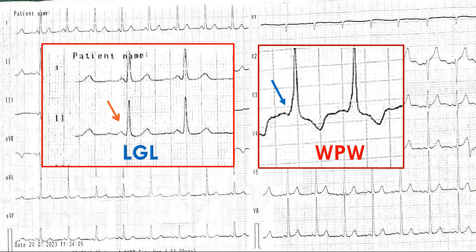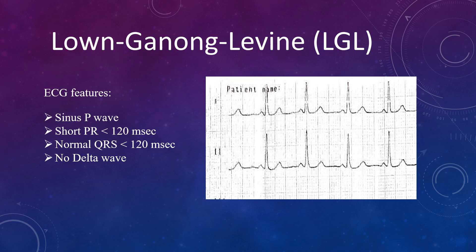There is a terminology called LGL, or Lown-Ganong-Levine syndrome. This is a syndrome in which there is a short PR interval but there is no accessory pathway. The features needed to diagnose this syndrome are: the P waves must be sinus — upright in inferior and chest leads, inverted in AVR; the PR should be short, that is less than 120 milliseconds; the QRS duration should not be prolonged, remaining within normal limits and less than 120 milliseconds; and there should be no delta wave.